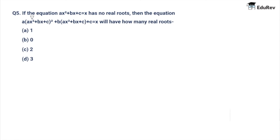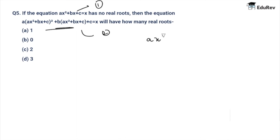The last question of the day: if ax² + bx + c = x has no real roots, then the related equation — let's call it equation two — will have how many real roots? Since ax² + bx + c = x has no real roots, equation two also has no roots. So the number of roots is zero.